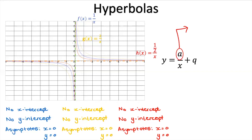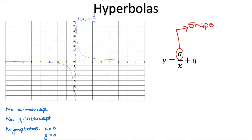Now we know what happens when a is positive. But what happens if a is negative? Let's plot negative 1/x. Instead of being in the top right and bottom left, it is now in the top left and bottom right. Those four sections are called quadrants. Initially f(x) was in quadrants 1 and 3, and now with negative a it is in quadrants 2 and 4.